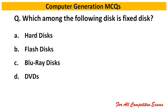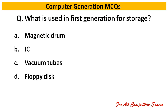Next question: Which among the following disk is a fixed disk? Right answer is hard disk. Next question: What is used in first generation for storage? Right answer is magnetic drum.